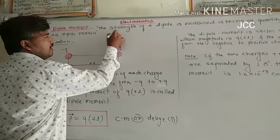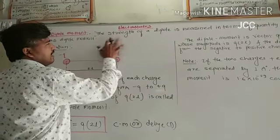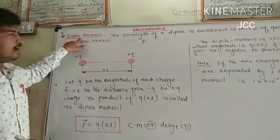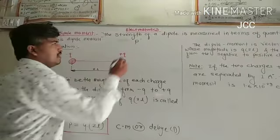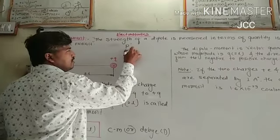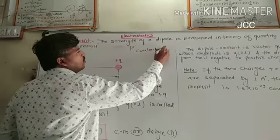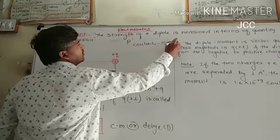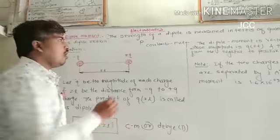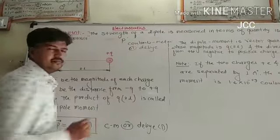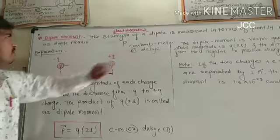Dipole moment is denoted by capital P. It is a symbol like a dipole moment, capital P. And its SI unit is Coulomb-meter, Coulomb-meter or Debye.